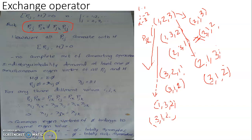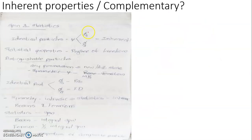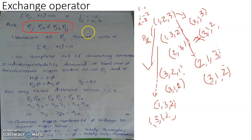When λ_ij equals minus 1, then phi will be a totally anti-symmetric wave function, and the particle will always be represented by an anti-symmetric wave function. This indicates that the symmetry nature of the wave function of identical particles will be a constant of motion — it will always be a conserved quantity.